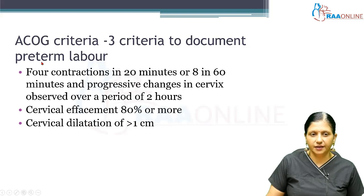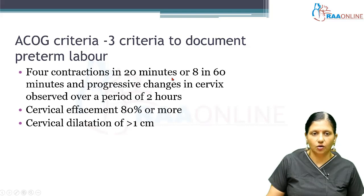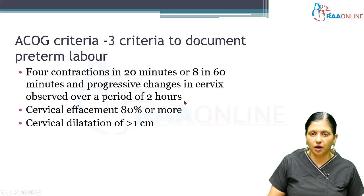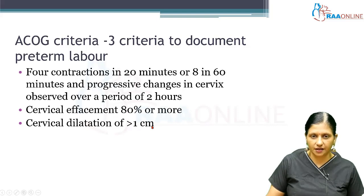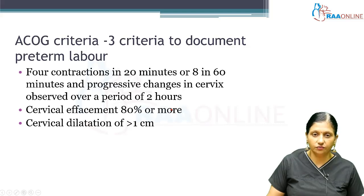ACOG, the American College of Obstetrics and Gynecologists, says there must be three criteria to document preterm labor: four contractions in 20 minutes or eight contractions in 60 minutes, plus progressive changes in the cervix observed over two hours, with cervical effacement of 80% or more and cervical dilatation of more than one centimeter.